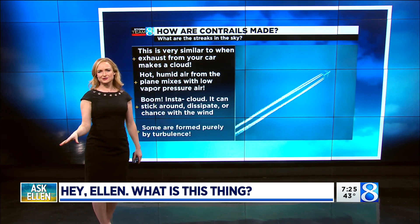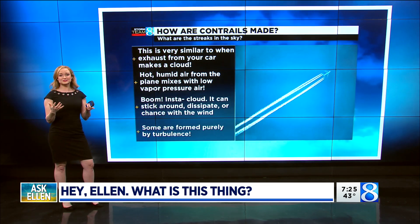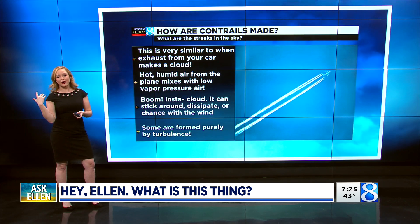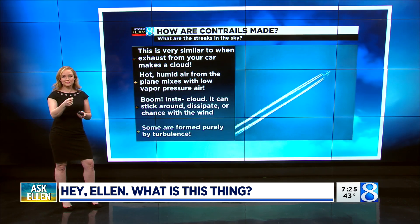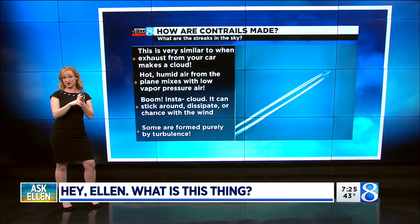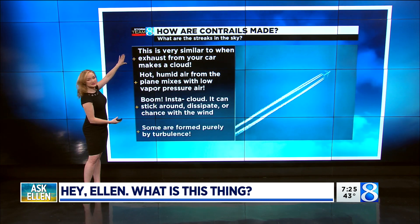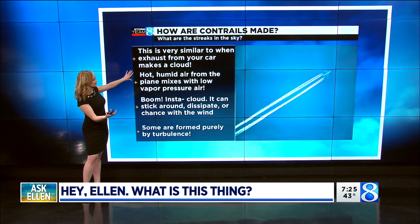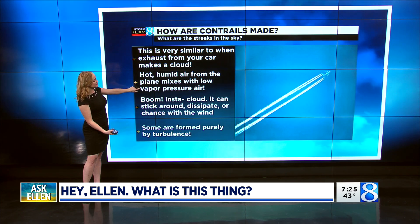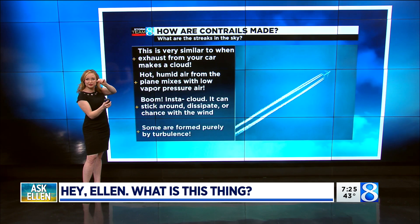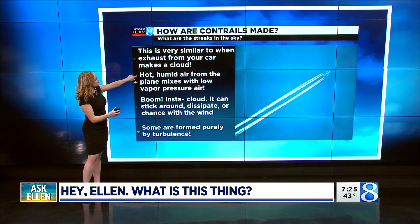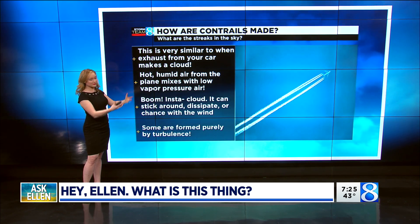So let's just talk about airplane contrails really quickly and how they form, because we get this question quite a bit too. Believe it or not, it's really similar to just what happens in the back of your car on a cold day. When you start the car, you get a cloud that forms, because you have exhaust fumes and very hot air colliding with colder air. So when you see this setup with some exhaust from an airplane, the same thing happens. We need low vapor pressure air and it mixes with the hot humid air and a little bit of the particulate matter that comes out from the exhaust of the airplane.